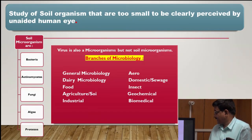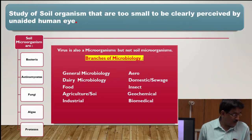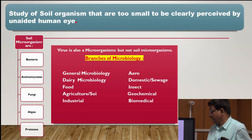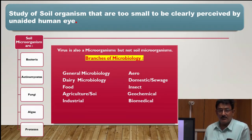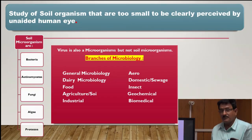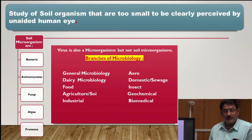The various branches of microbiology include general microbiology, dairy microbiology, food microbiology, agriculture microbiology, soil microbiology, industrial microbiology, biomedical microbiology, domestic microbiology, and geochemical microbiology. These are the different branches of microbiology.